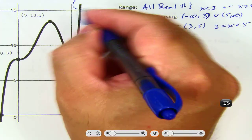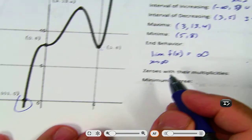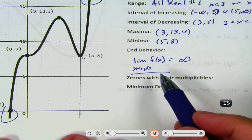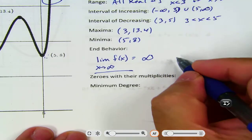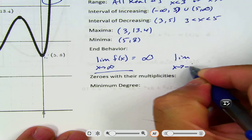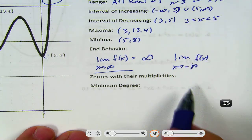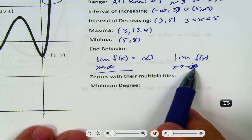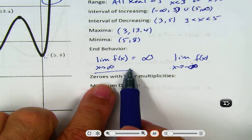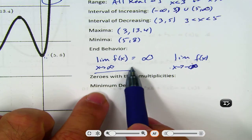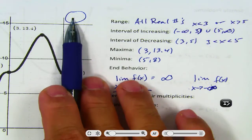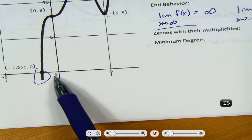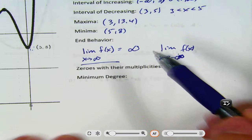End behavior is looking at what's going on at the ends. The notation is this part here — this part really doesn't change. You have the x to negative infinity notation and the x to positive infinity notation. See, it looks the same. That's negative infinity — no matter what it looks like, that's negative infinity. So it's x to negative infinity, x to positive infinity. This is just a fancy way of saying what's happening on the right-hand side and the left-hand side.